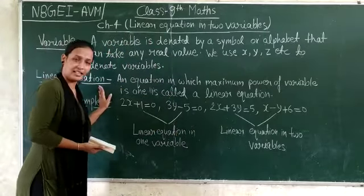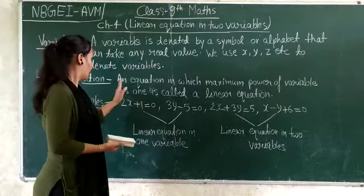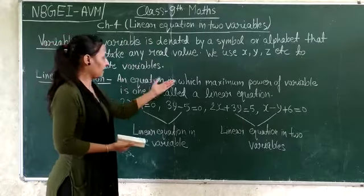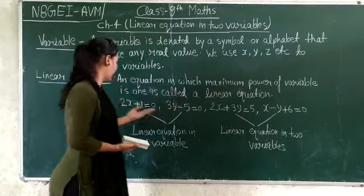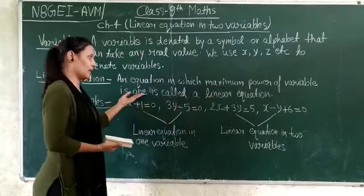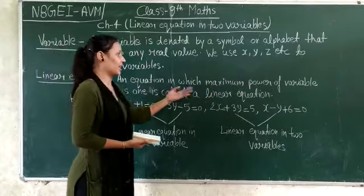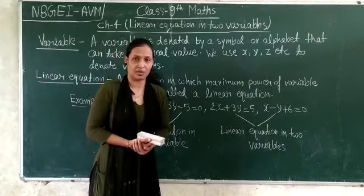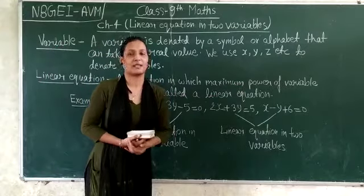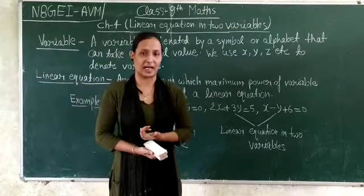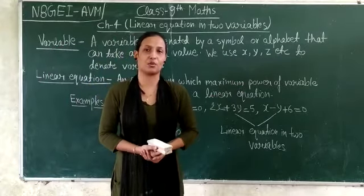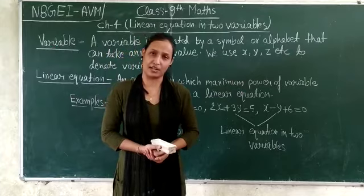Our second topic is linear equations. What are linear equations? An equation in which the maximum power of the variable is 1 is called a linear equation. That means if an equation has the power of its variable equal to 1, that type of equation is known as a linear equation.